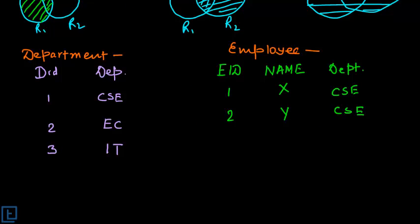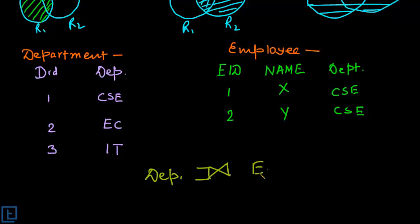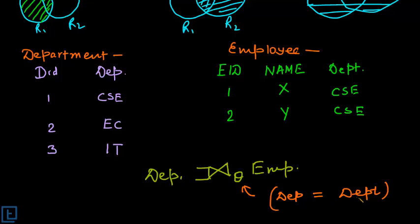Now let's solve an example. We have two relations: a department relation with attributes DID and department name, and an employee relation with attributes EID, name, and department. We have to join these tables using left outer join between department and employee, with the joining condition being department equal to DPT — where DPT is the attribute from the employee table.